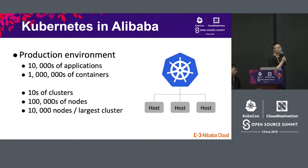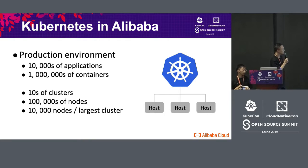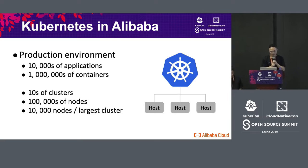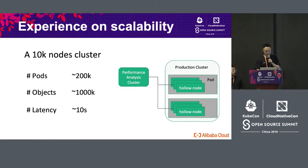In 2015, we had 1 million containers. If you look at the peak, it will be very high. The peak appears on the W11 shopping day. Now we have 10,000 clusters, 10,000 nodes, and we use Kubernetes.